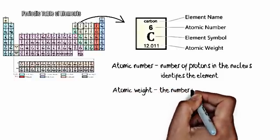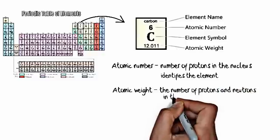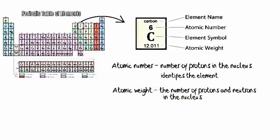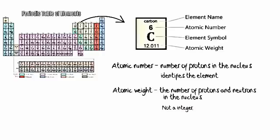The atomic weight is the number of protons and neutrons in the nucleus. You'll notice that it's 12.011.